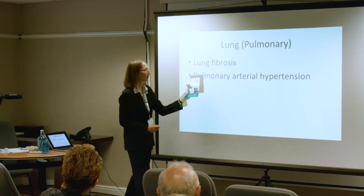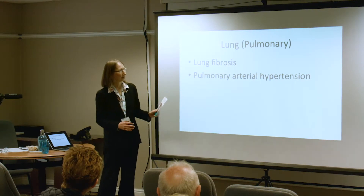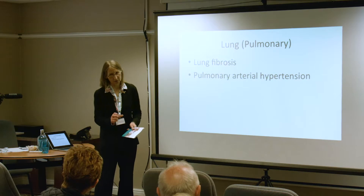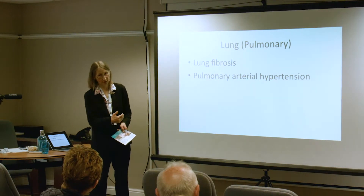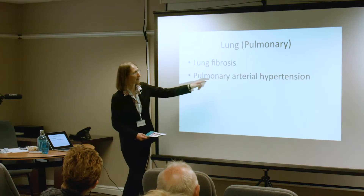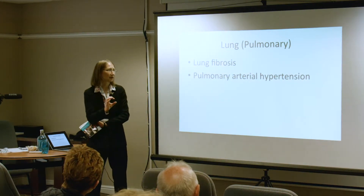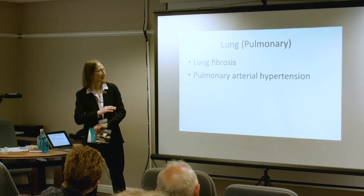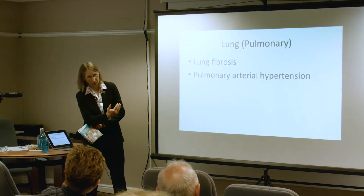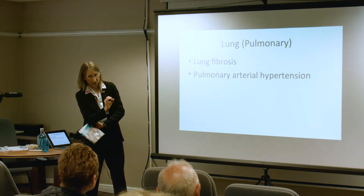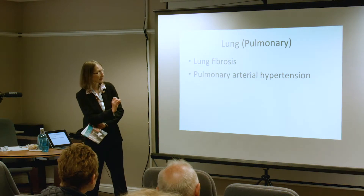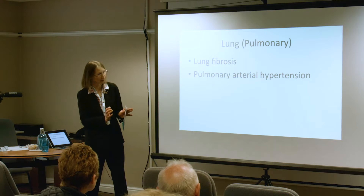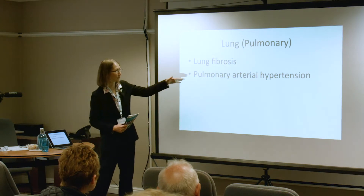Pulmonary hypertension is one thing, and pulmonary arterial hypertension is a subgroup within pulmonary hypertension — one of its causes. Pulmonary arterial hypertension involves the artery that goes from the right side of the heart to the lungs. These arteries can become involved in scleroderma, particularly in the more vascular type of scleroderma with the centromere antibody and the limited type.